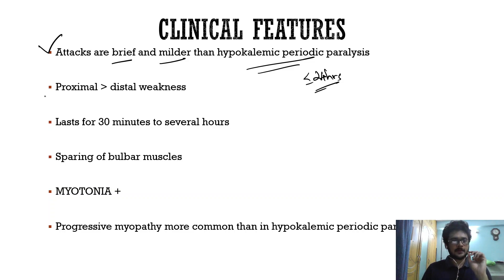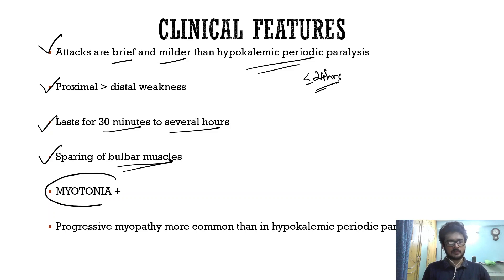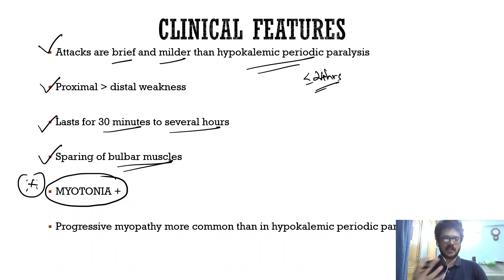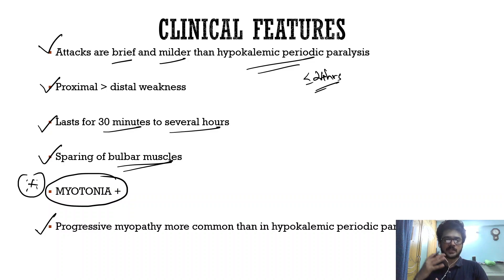Proximal muscle weakness is present as muscles are involved. Attacks can last as short as 30 minutes to several hours. Respiratory and bulbar muscles are spared, just as in hypokalemic PP. A very important distinguishing feature: patients with hyperkalemic PP have myotonia — delayed relaxation after muscle contraction. There is no myotonia in hypokalemic PP. These patients also develop progressive myopathy, which is more common in hyperkalemic PP.